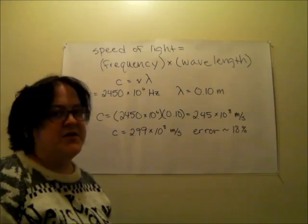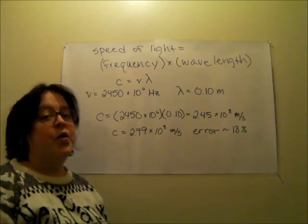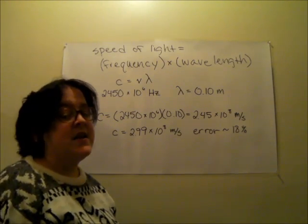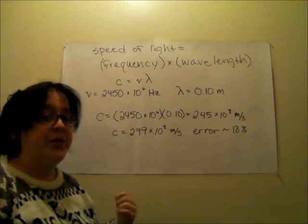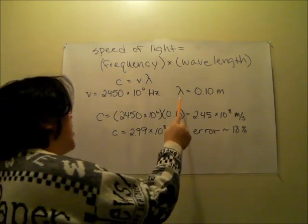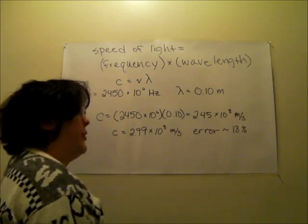So for our calculations the frequency is 2450 times 10 to the sixth hertz. This number can just be found on the back of your microwave. This is a pretty common frequency for microwaves. So our wavelength is the calculation that we made.